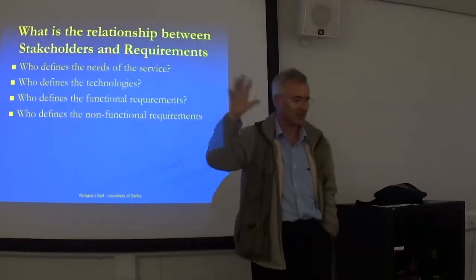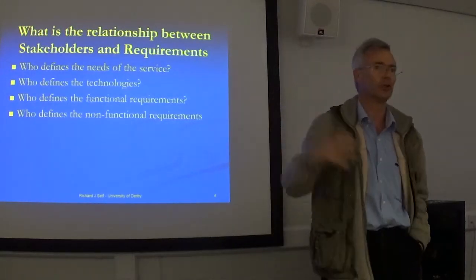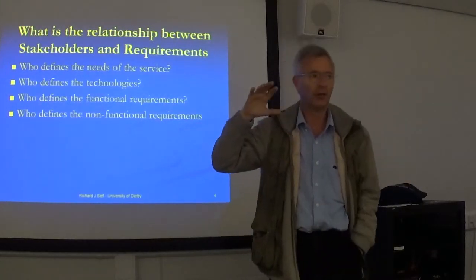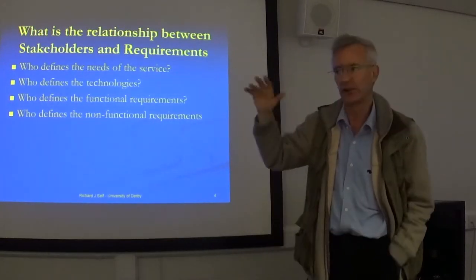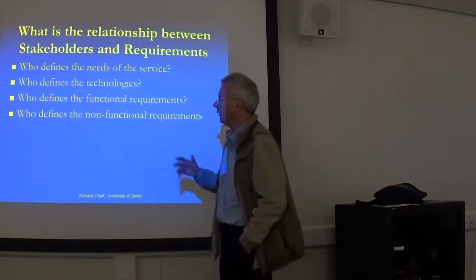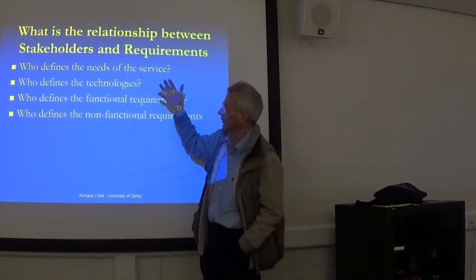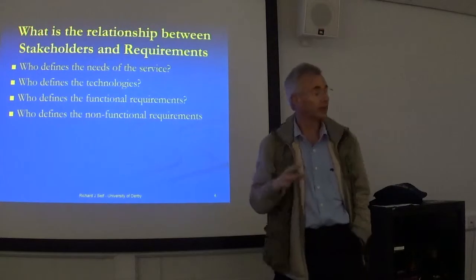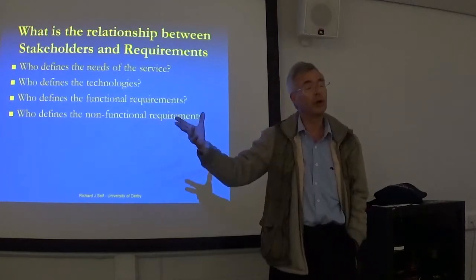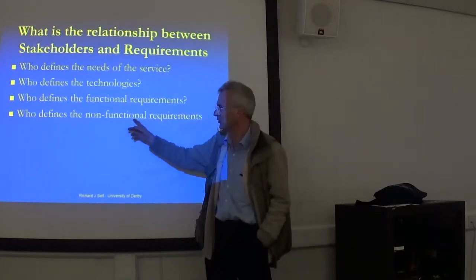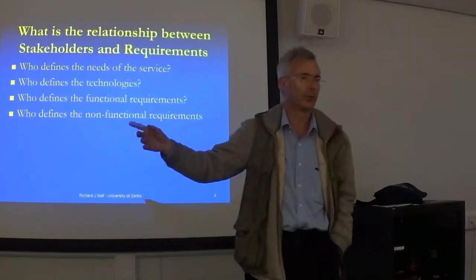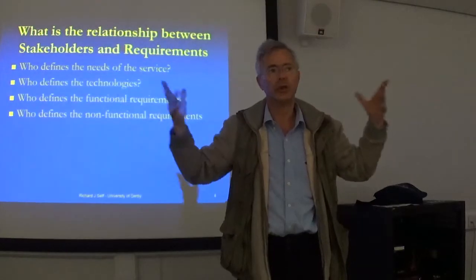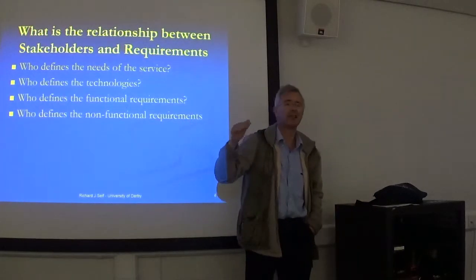So the question is: we've now identified some of the critical, important stakeholders in our project. But what's the relationship between knowing who the stakeholders are and developing those high-level, middle-level, and low-level sets of requirement specifications? You need to use Zachman Enterprise Architecture to really think about who is defining the needs of the service, who defines the technologies, the functional requirements — what the things do — and just as critically, the non-functional requirements. Because if you're designing a new service, an app or a total system, you need to think about the non-functional requirements right from day one.